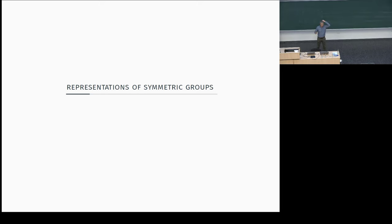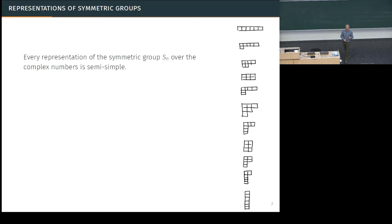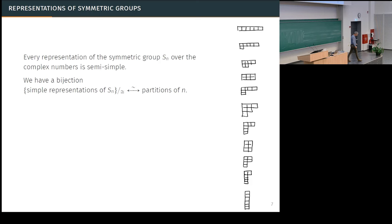For representations of symmetric groups over the complex numbers, as with any finite group, the category is always semi-simple. In the case of the symmetric group, we have a beautiful description of the simple representations in terms of partitions. Here are the partitions of six — for each one of these partitions there is a simple representation of the symmetric group, and this is a complete list of all the ways the symmetric group can act simply on a complex vector space.